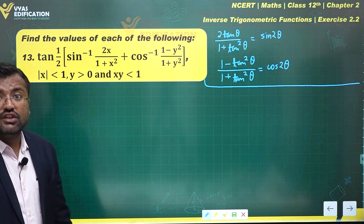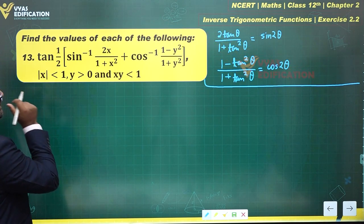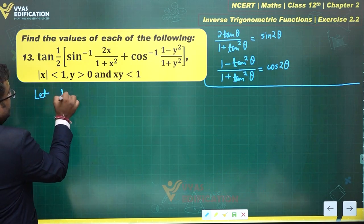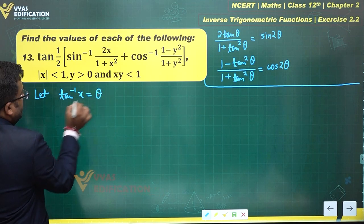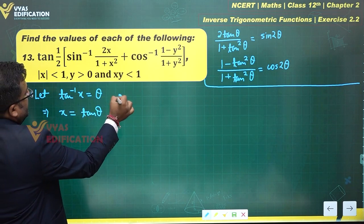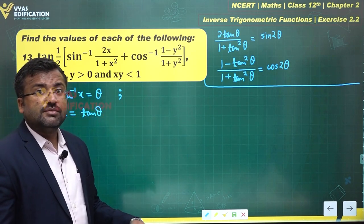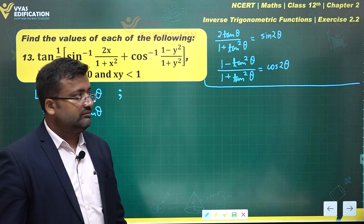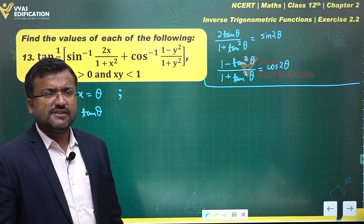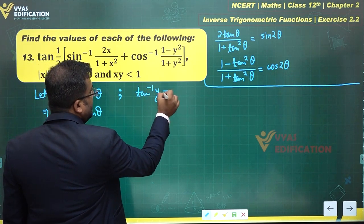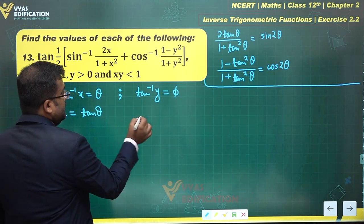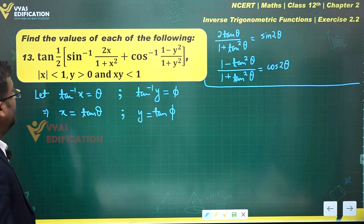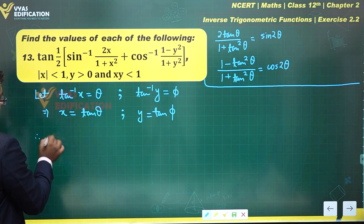For sin inverse 2x/(1+x²), we substitute x = tanθ, or equivalently let tan inverse x = θ, which gives x = tanθ. For cos inverse (1-y²)/(1+y²), since we've already used θ for x, we use a different variable: let y = tanφ, so tan inverse y = φ.